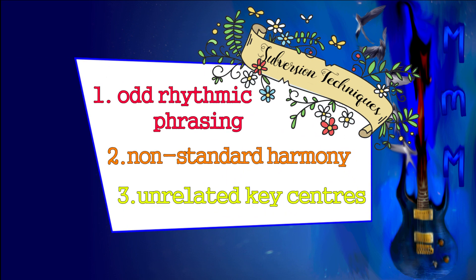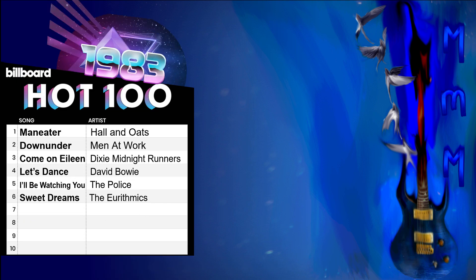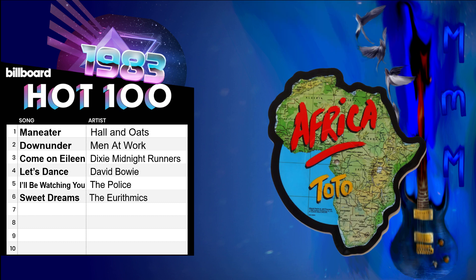I've added some resources about phrasing in the description if you want to do some more reading on the subject. Next let's look at Toto's use of non-standard harmony. Just like with rhythm and the use of even phrases, harmony in pop music tends to stick to some standard sets of rules. Instead of just telling you what these are, I'm going to take a look at some of the same songs from the Billboard Top 100 and see if we can glimpse some similarities in their use of harmony, and then compare that to what Africa gets up to.